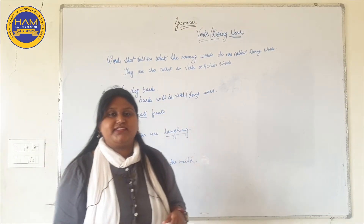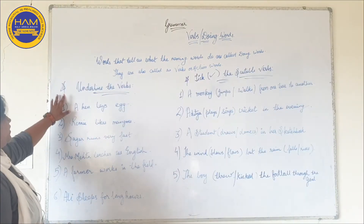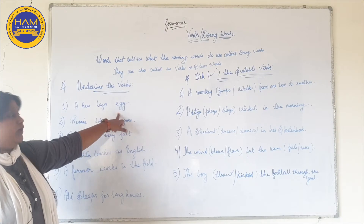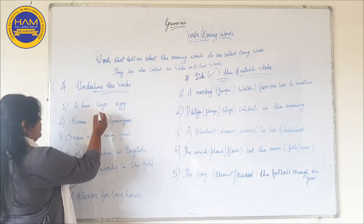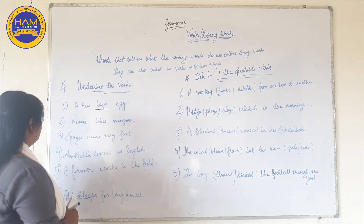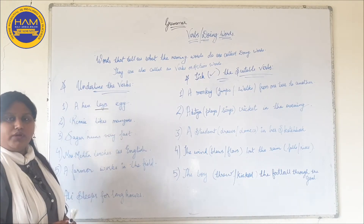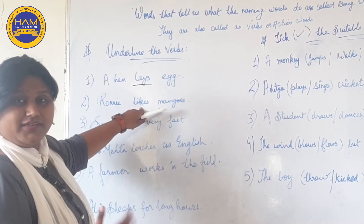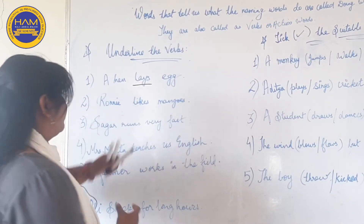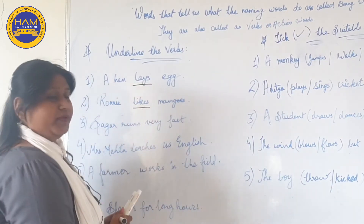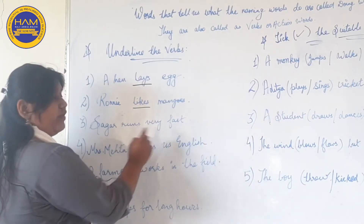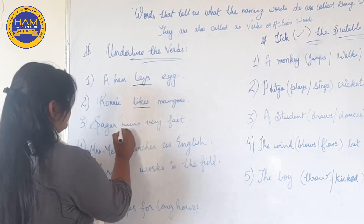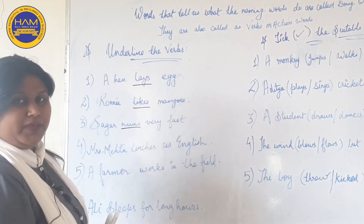Now let us see some examples — underline the verbs. A hen lays eggs. What does a hen do? Hen lays eggs, so 'lays' will be the verb. Ronnie likes mangoes. What does Ronnie like? He likes mangoes, so 'likes' will be the verb. Sagar runs very fast. What does Sagar do? Sagar runs very fast, so 'runs' will be the verb.